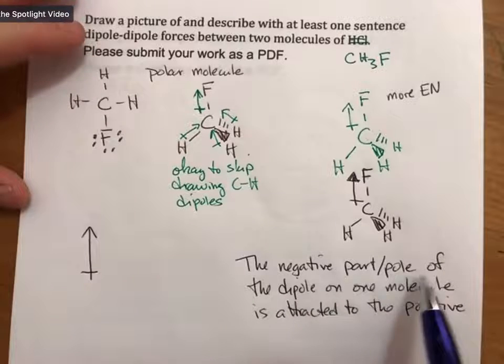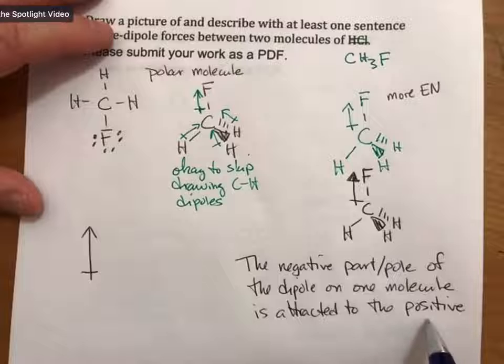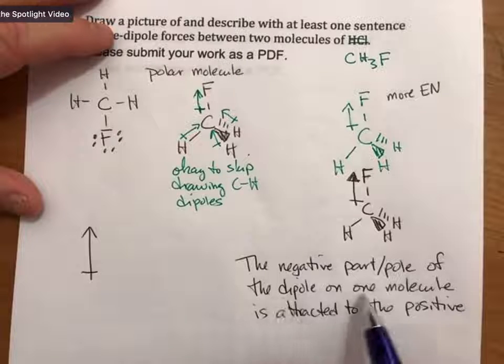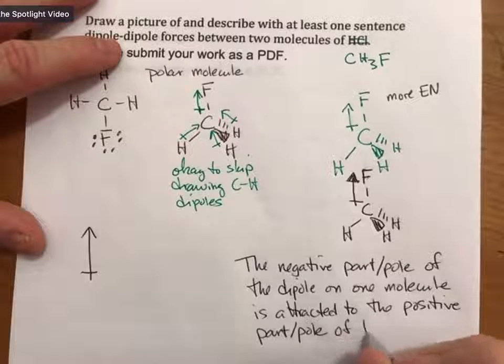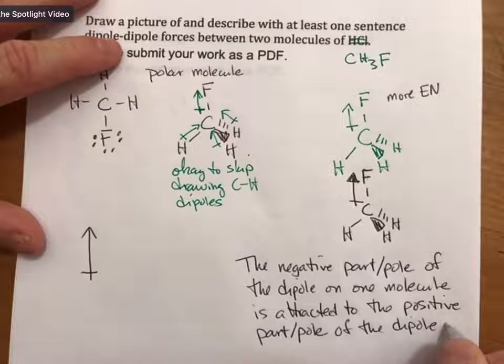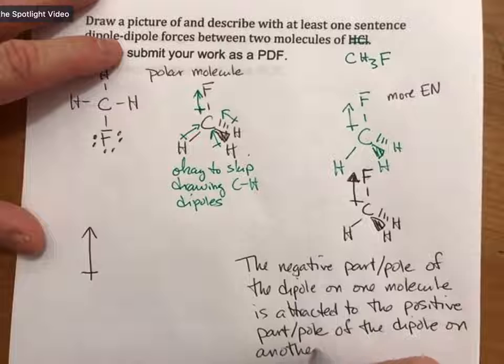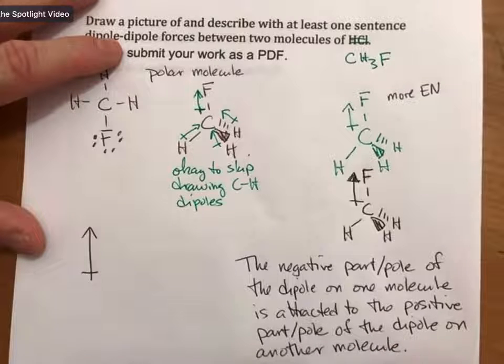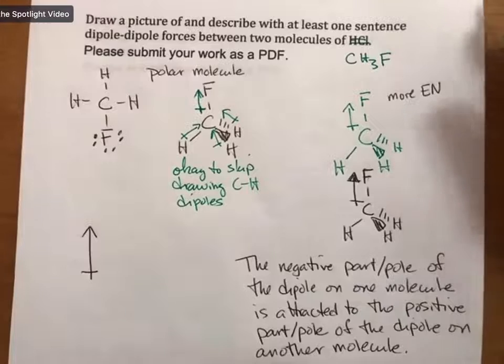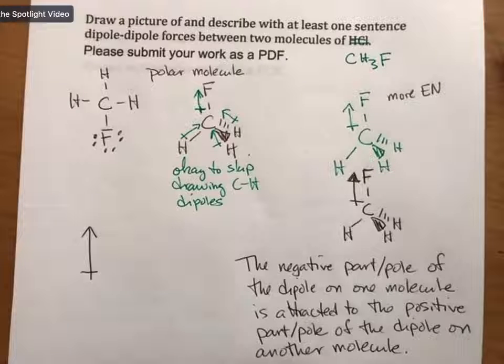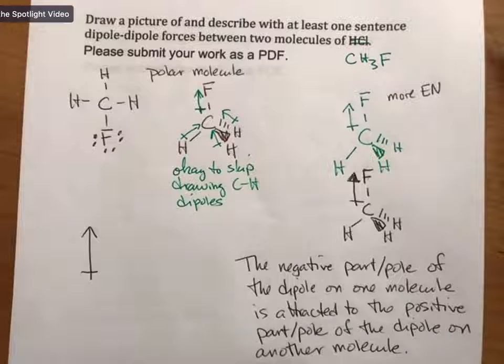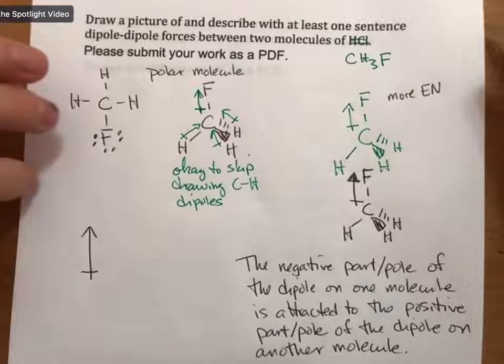The negative part or pole of the dipole in one molecule is attracted to the positive part or pole of the dipole on another molecule. And I guess typically we say particle and not molecule, but to have a dipole pretty much you have to be at least a molecule. So you can't be an atom and you won't be an ion either, because ions have ion-ion forces. Any other questions about this?